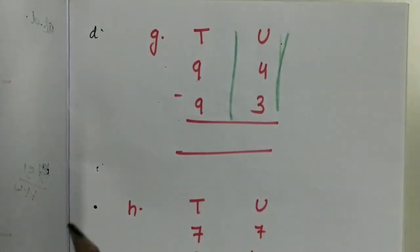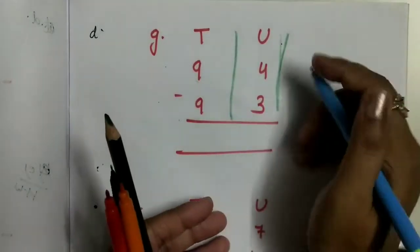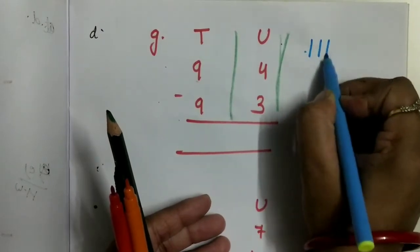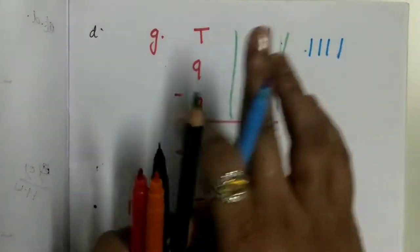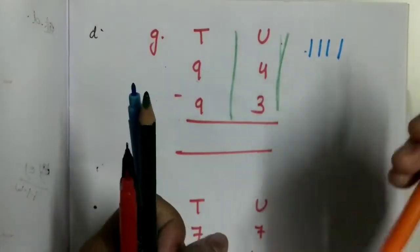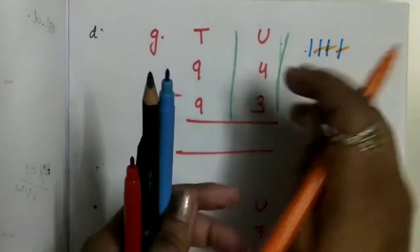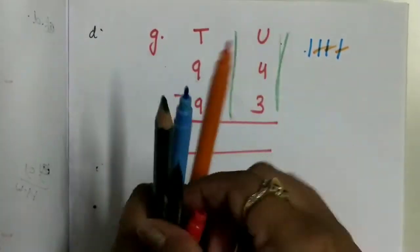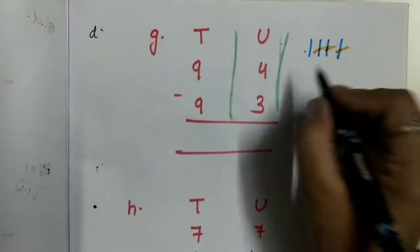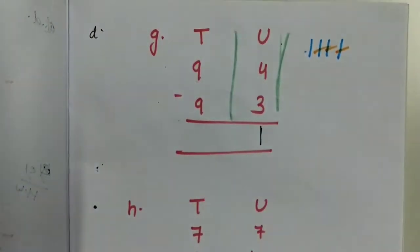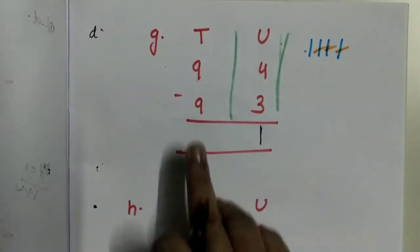In units we have 4 minus 3. Draw 4 lines: 1, 2, 3, 4. Take away 3 from it: 1, 2, 3. So the remaining will be 1. So 4 minus 3 will be 1.